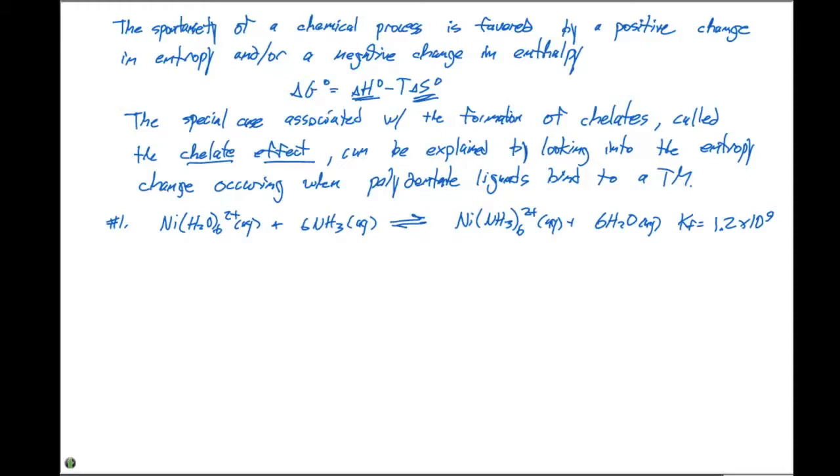We have a very large formation constant. Delta G equals minus RT ln K. Since K is large and positive, delta G is going to be large and negative. This is a spontaneous process under standard conditions.